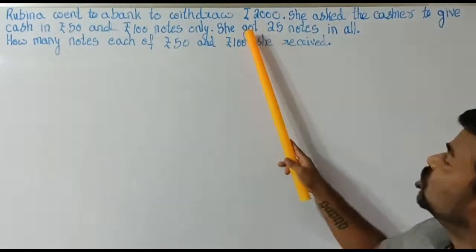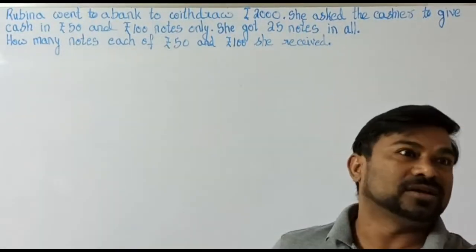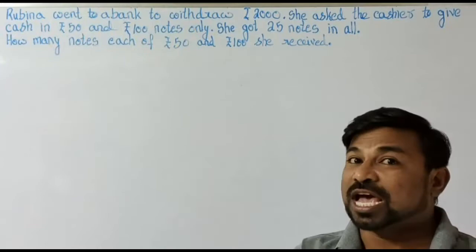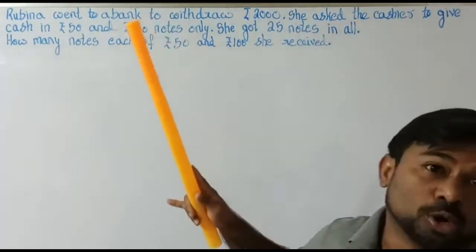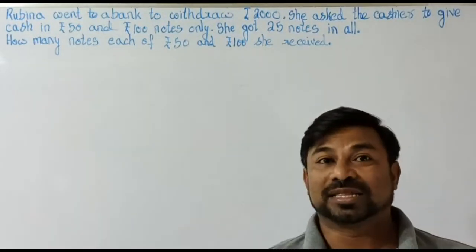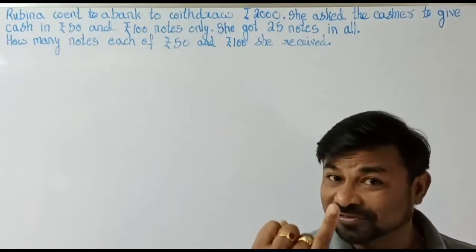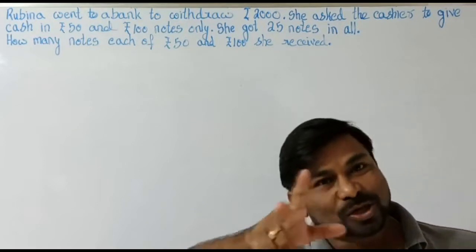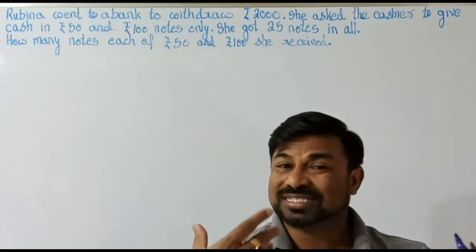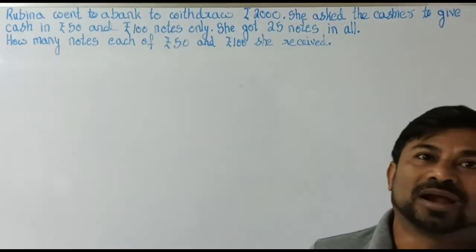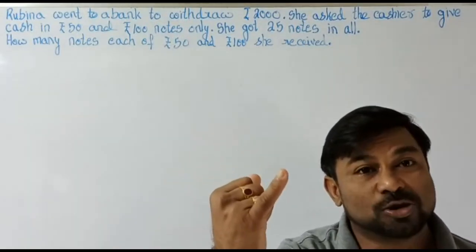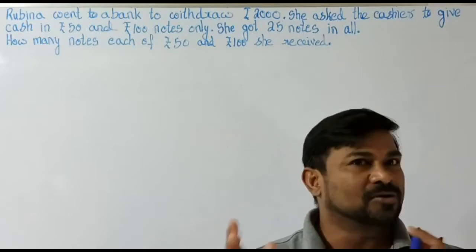The cashier gave Rubina 2000 rupees in 50 and 100 rupee notes as requested. When Rubina started counting, she observed she had 25 notes in total. The question is: how many 50 rupee notes are there, and how many 100 rupee notes are there? We have two key facts: total number of notes is 25, and the total value is 2000 rupees. How many of each denomination we don't know — those are our two unknowns.